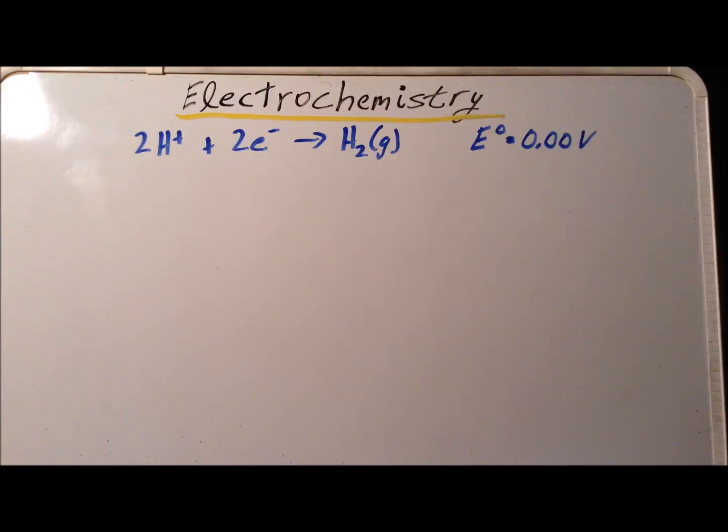The electrochemical data that we are going to use are the standard reduction potentials. The first potential is the reduction of two protons by two electrons to give one molecule of hydrogen gas. The standard reduction potential for this reaction is exactly zero volts. It is exactly zero volts because this reaction is set to be zero in our standard for the standard reduction potentials.